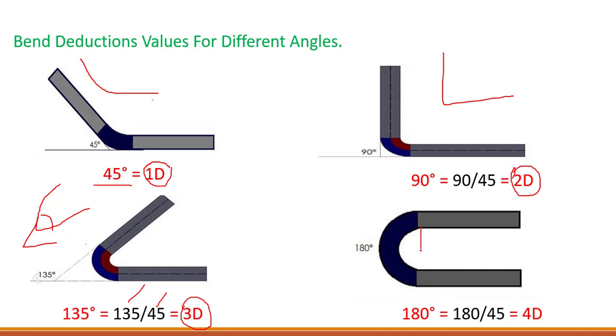And next, if our bend is 180 degrees, then what will be the bend deduction? 180 divided by 45, which means 4D.